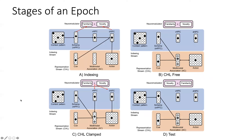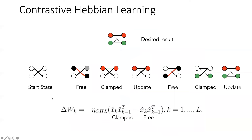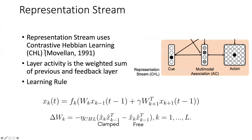How it was applied here: after the indexing, you have the free state, then clamp both sides and update. This is actually the testing phase when artificial lesions of the hippocampus would be applied. If you're interested in learning more about contrastive Hebbian learning, I recommend the paper and the work by Javier Movellan, who introduced it, along with more recent work by others who have used it over the years.